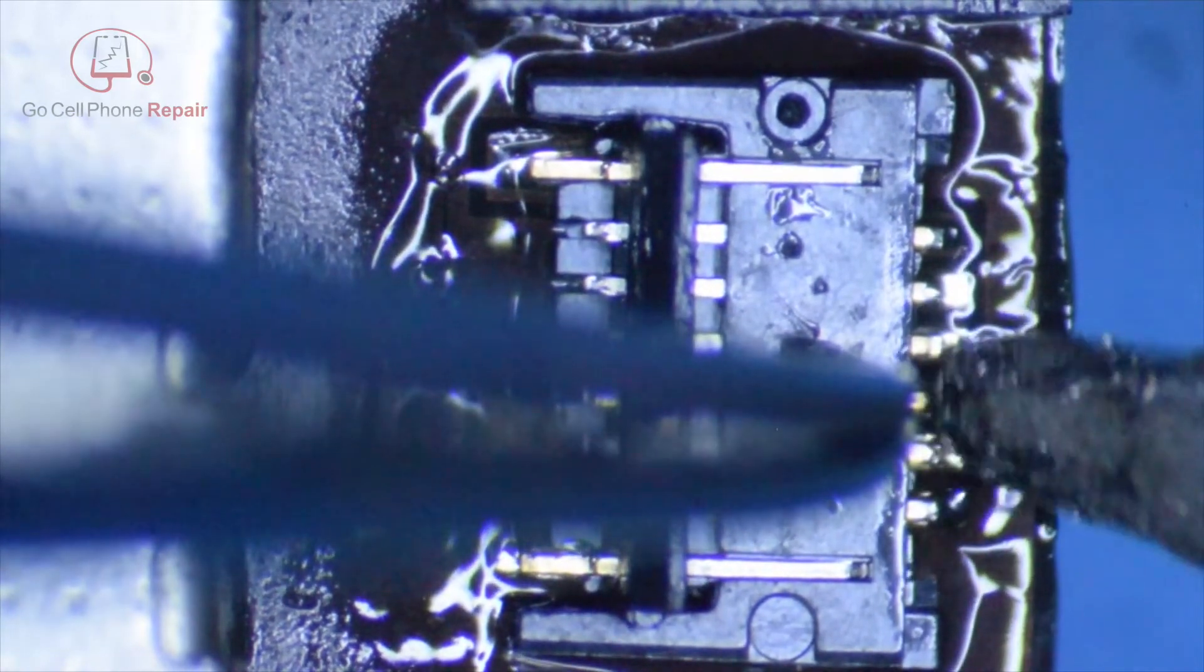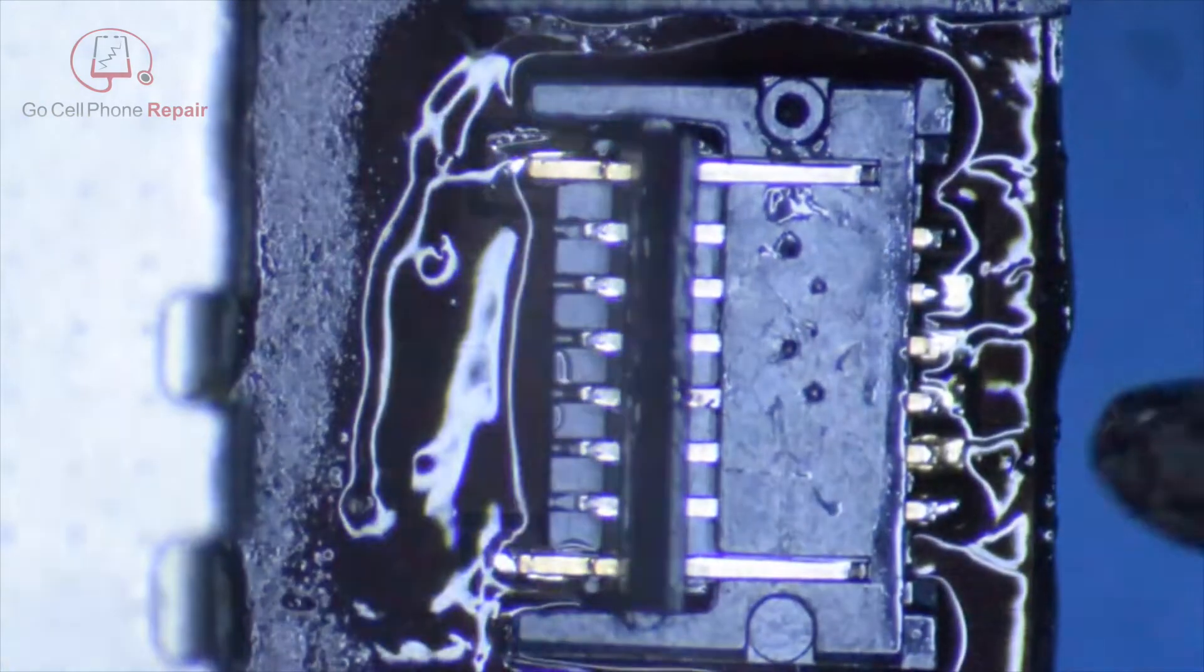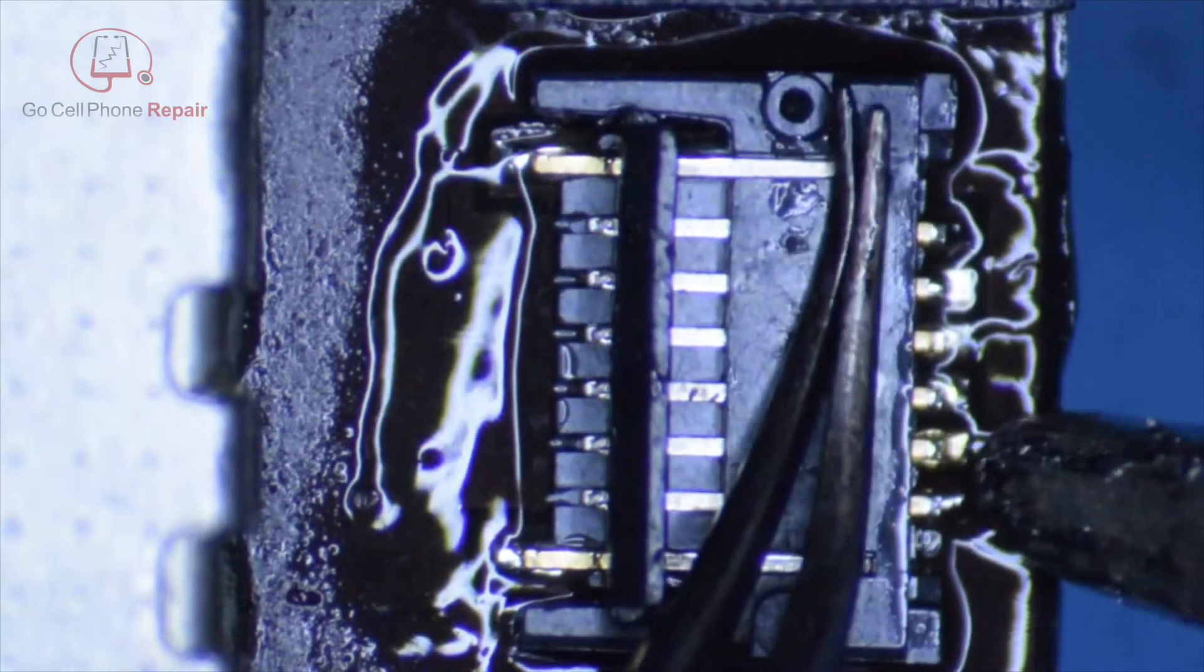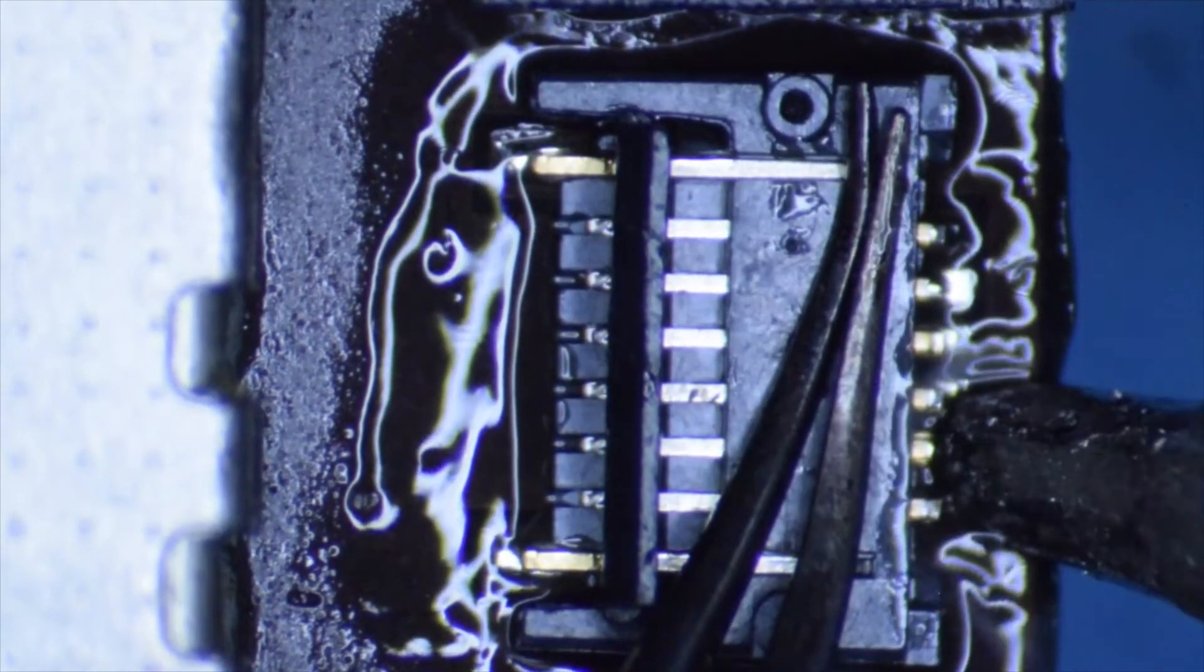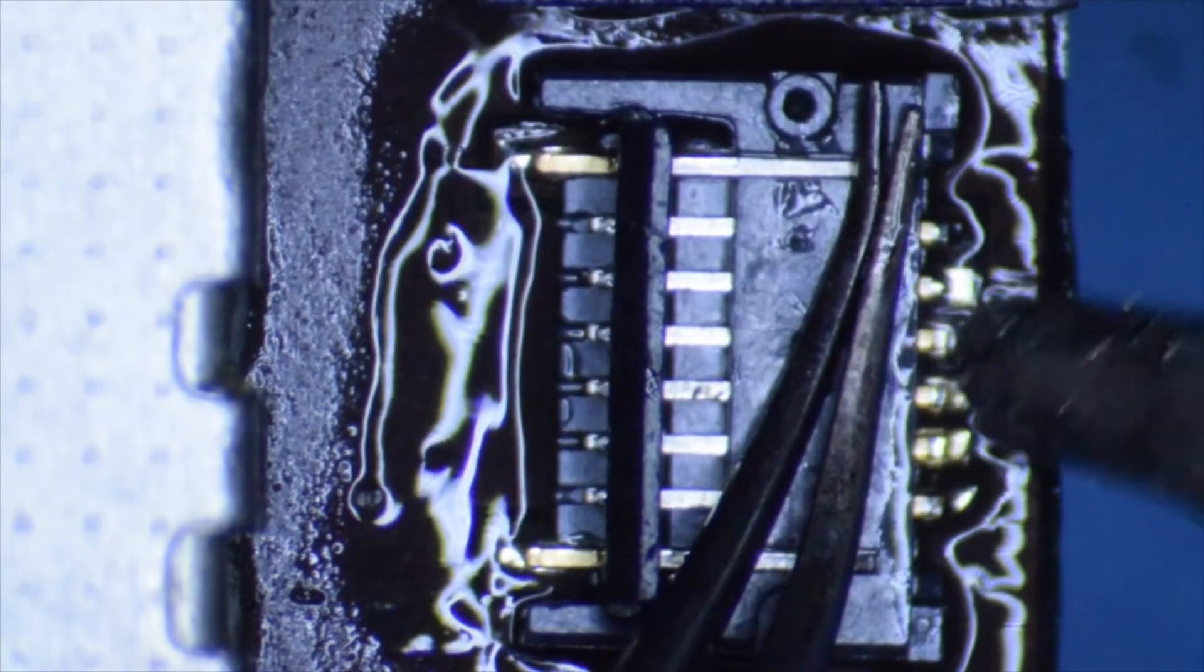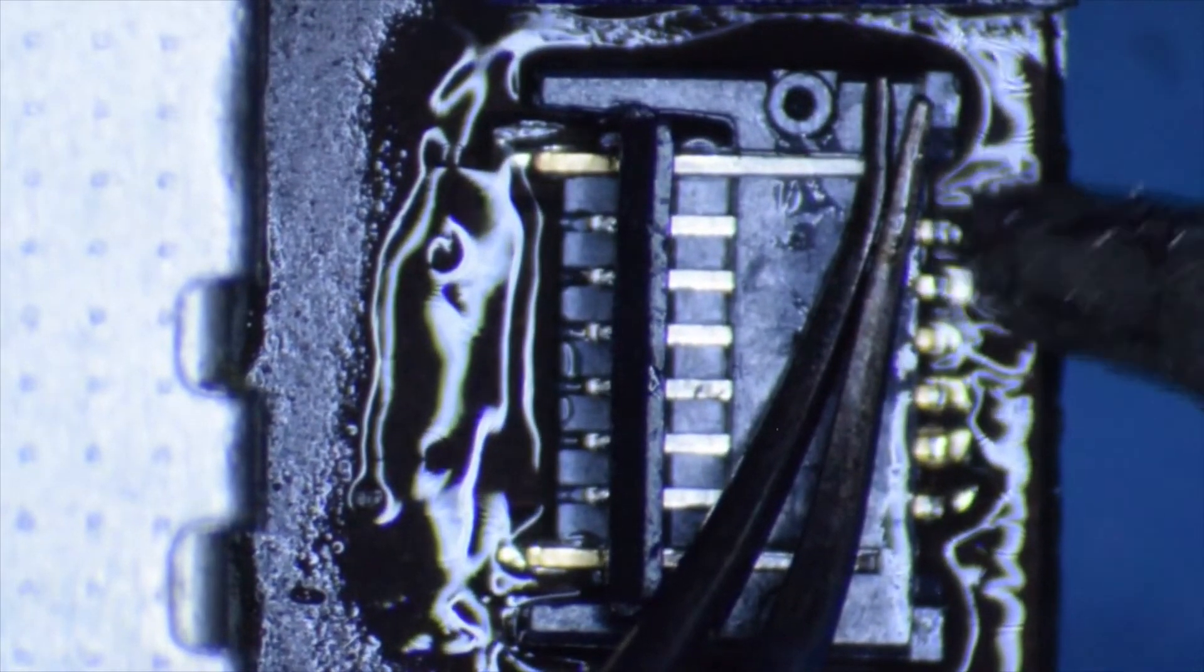but I want this to sit right up against the logic board. And as we melt that solder, we should be able to get this to go down right against the PCB so that we have a nice factory fit for this thing. And, of course, just make sure that you float solder all the way through and underneath onto these connections.